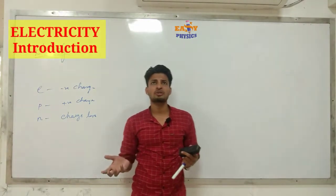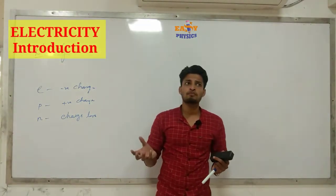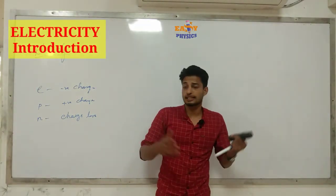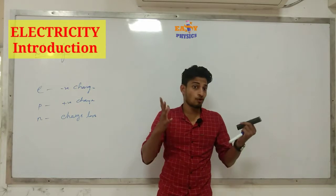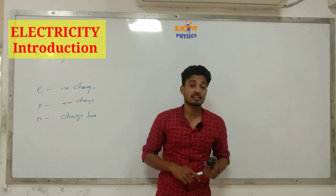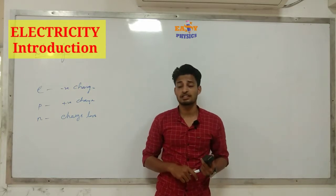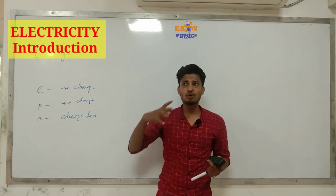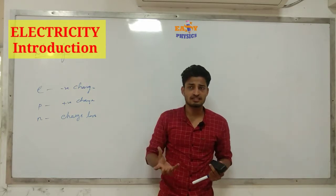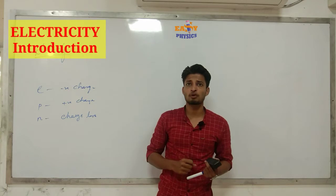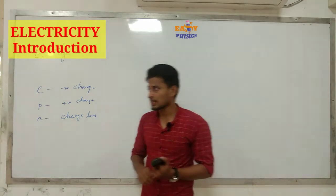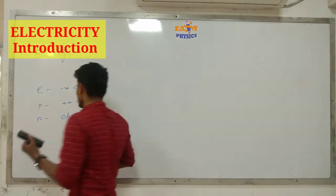We have learned about electric current — it is the flow of charges. You have learned about this: flow of charges. What is the symbol for electric current?